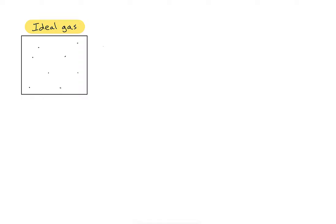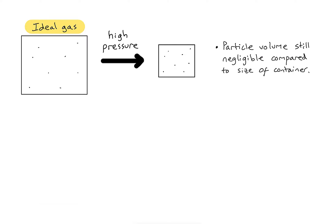Let's first consider high pressure conditions. Starting with the ideal gas, if I want to increase the pressure in the box, one way to do that is by decreasing the size of the box. Because the particles are assumed to have negligible volume, making the box smaller means they are still not taking up any significant amount of space, so the ideal gas equation still accurately predicts the behavior of those particles.